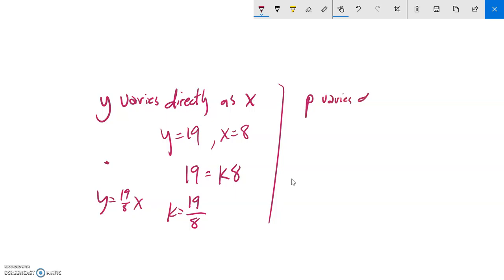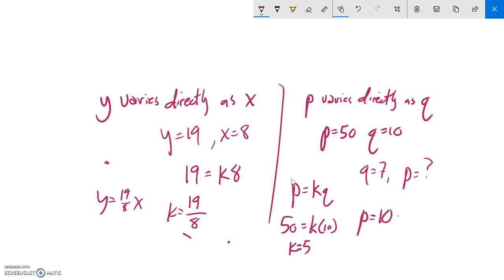Sometimes in this sort of situation, it'll ask you to find another value. So it might say something like 'p varies directly as q,' and then when p is 50, q is 10. And then it might say, like, if q was 7, what would p be? So let's set this up. p varies directly as q. When p is 50, q is 10. Divide both sides by 10, so k must be 5. So that means my model would be p equals 5 times q. So when q is 7, p must be 35.